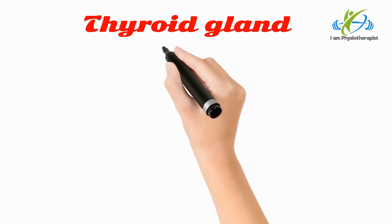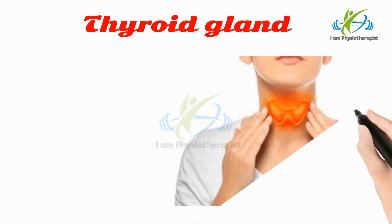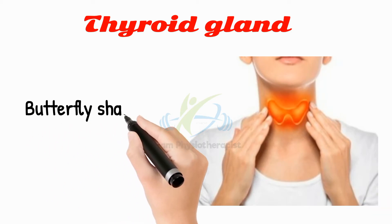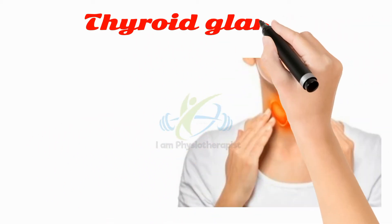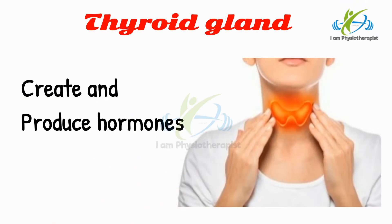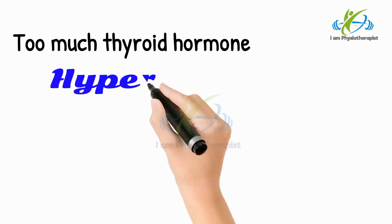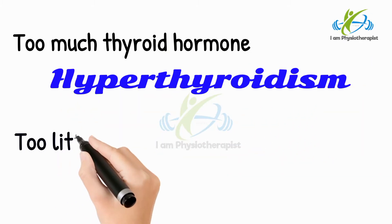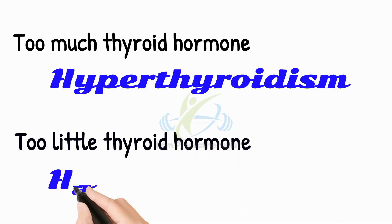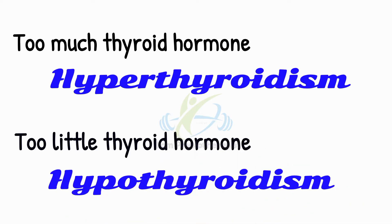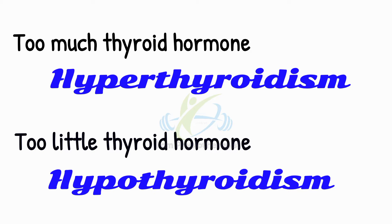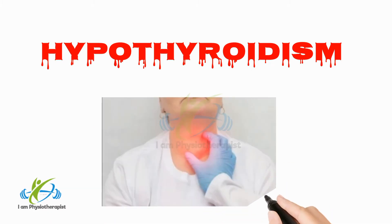The thyroid is a butterfly-shaped gland that sits low on the front of the neck. The thyroid gland creates and produces hormones that play a role in many different systems throughout your body. If your body makes too much thyroid hormone, you can develop hyperthyroidism. If your body makes too little thyroid hormone, it is called hypothyroidism. Both conditions are serious and require immediate attention. Here we will discuss hypothyroidism.